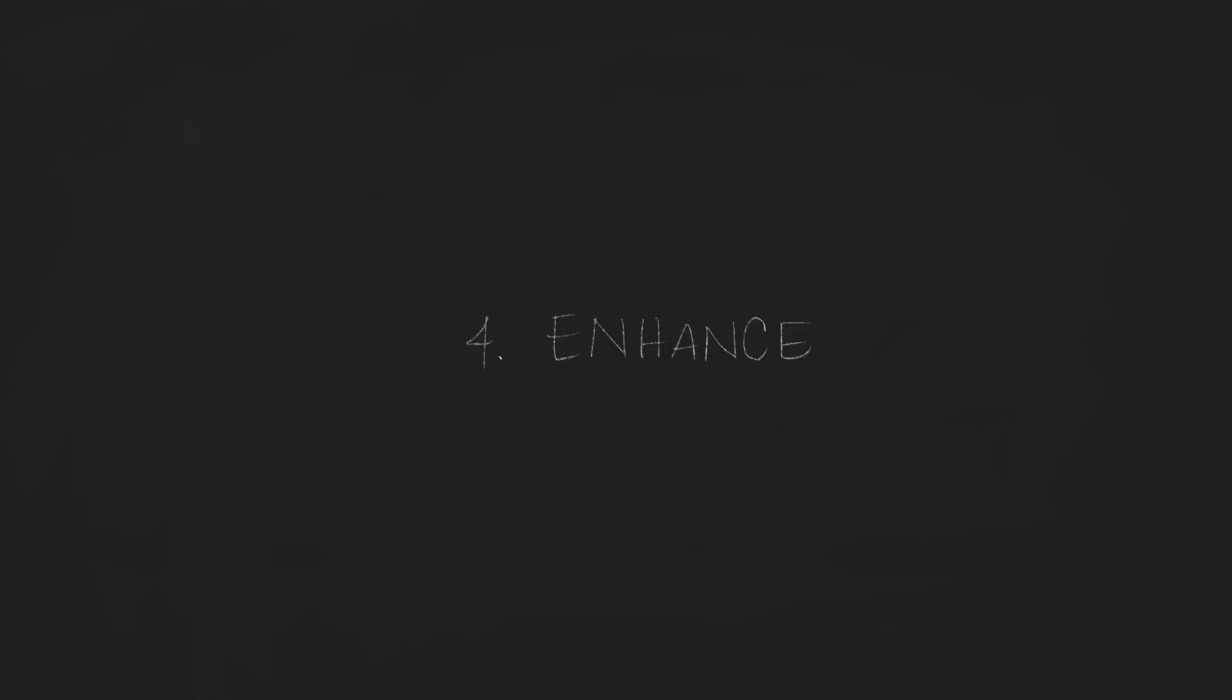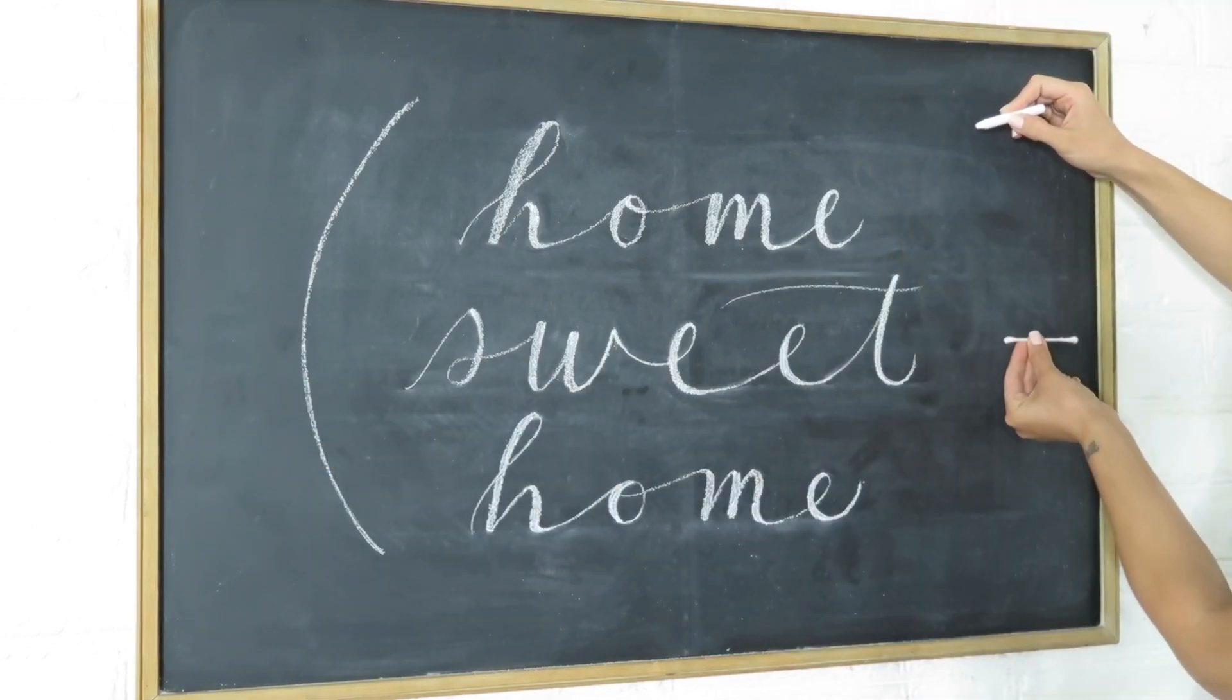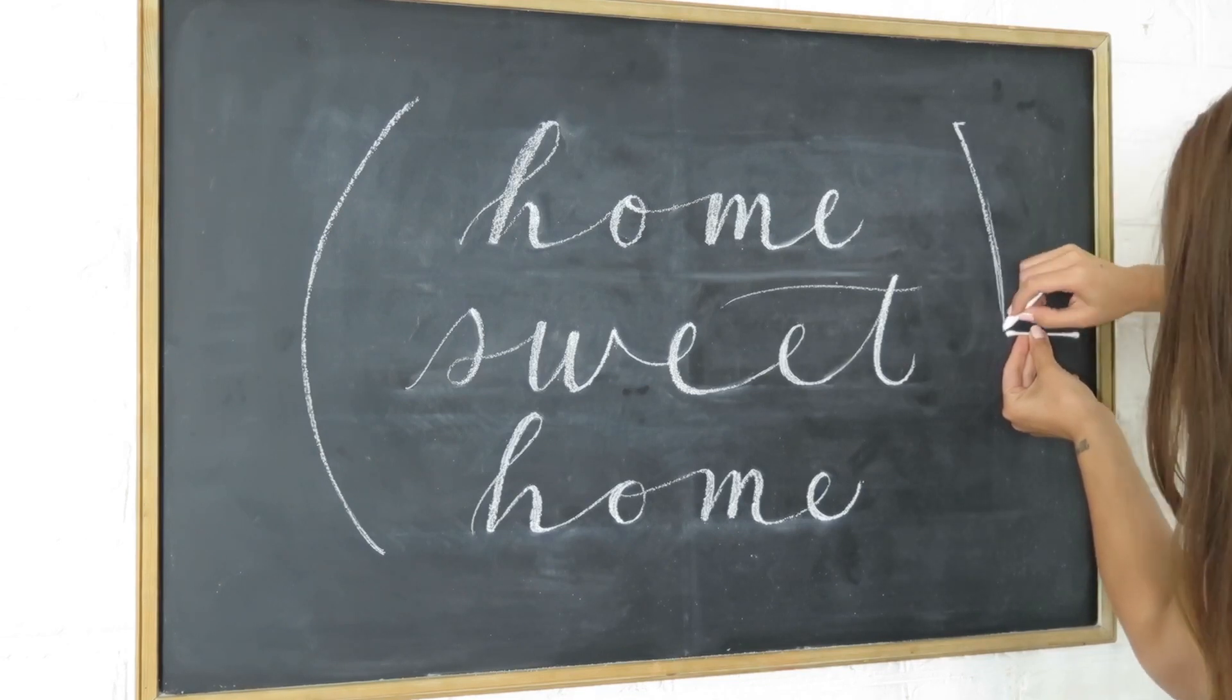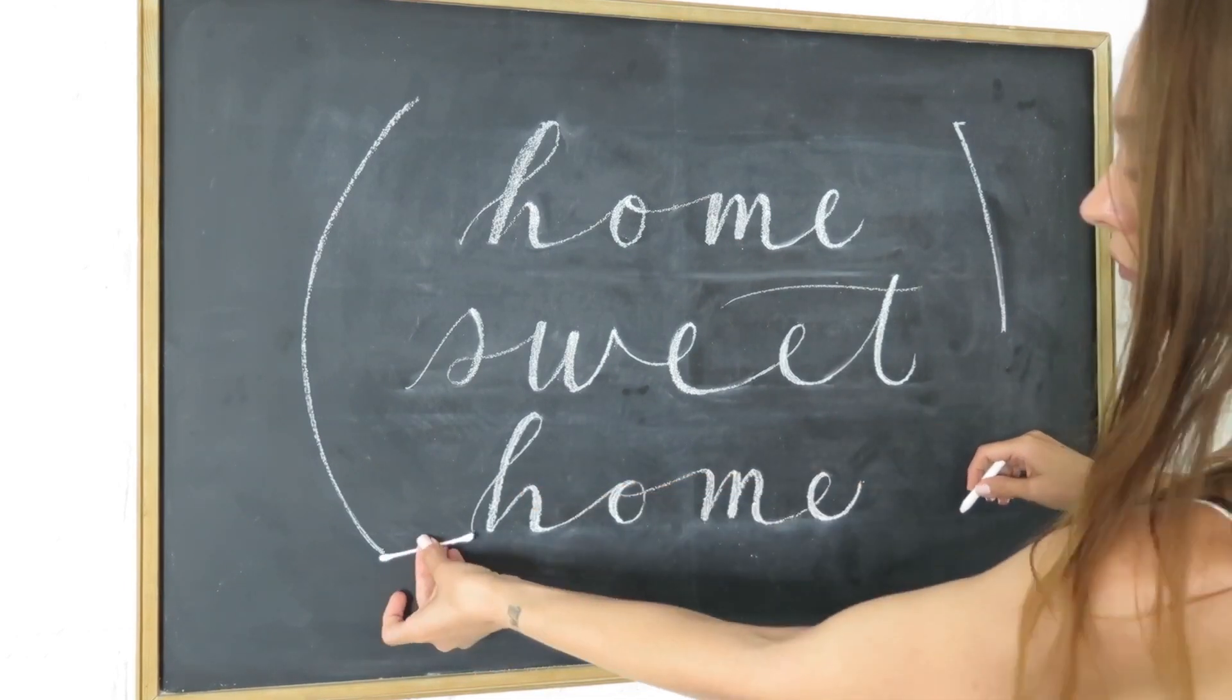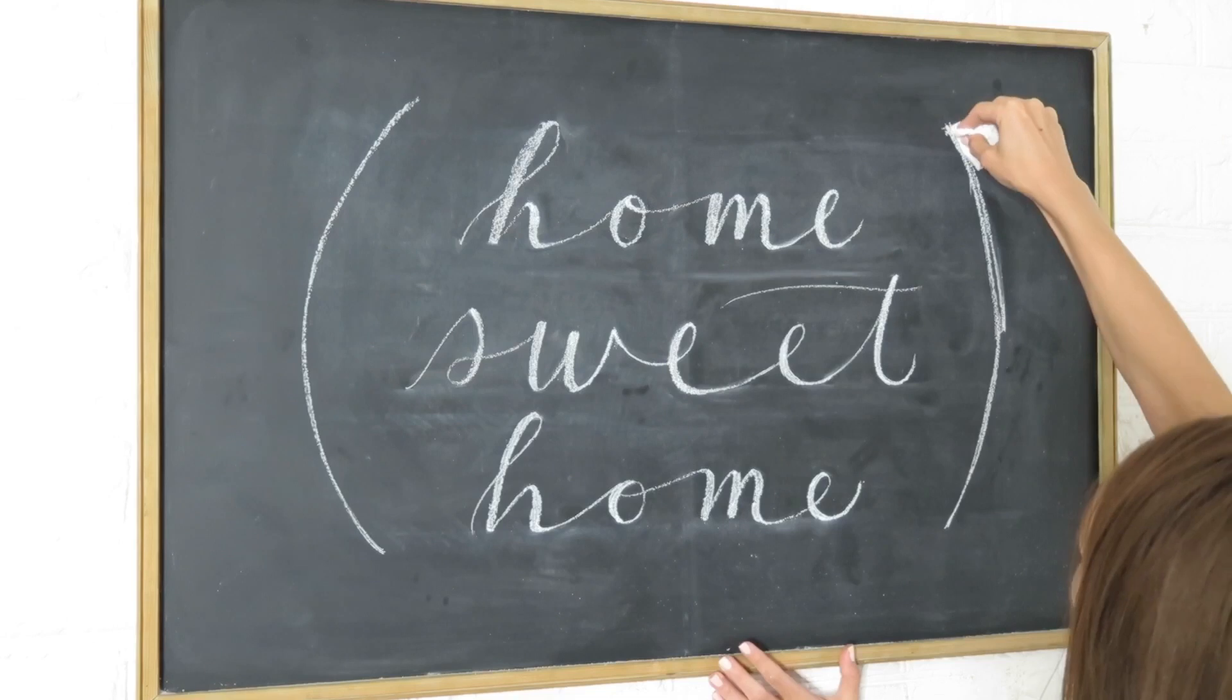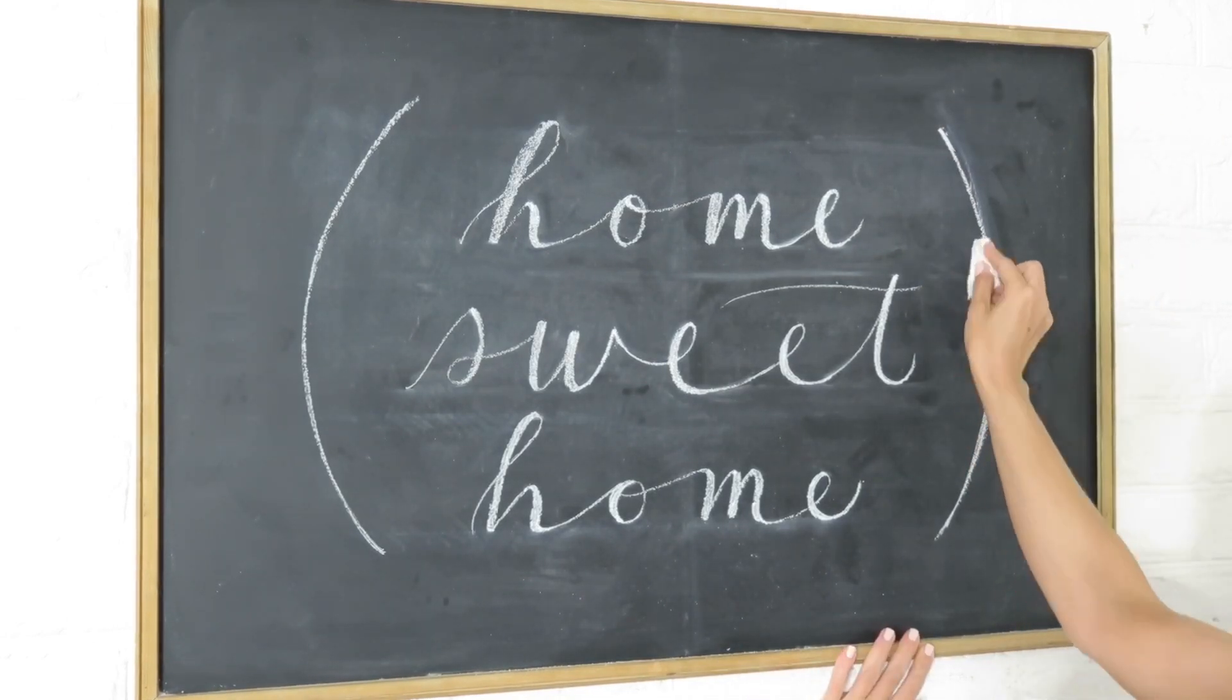Once you're done with your lettering, you can add designs to your chalkboard. Make sure you edit them so that you enhance rather than distract from your overall piece. I'm doing two sprigs of eucalyptus on each side of my lettering. Again, spacing is important here, but normally I just eyeball it for the design aspects. I'm trying to make them start and stop at similar heights and put them at equal distance from the lettering and the edges of the chalkboard.